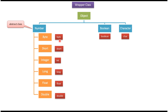For primitive datatype byte, the corresponding wrapper class is Byte. For primitive datatype short, the corresponding wrapper class is Short. For primitive datatype int, the corresponding wrapper class is Integer. For primitive datatype long, the corresponding wrapper class is Long. For primitive datatype float, the corresponding wrapper class is Float. For primitive datatype double, the corresponding wrapper class is Double.